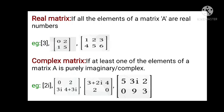Real matrix: if all the elements of matrix A are real numbers, then it is said to be a real matrix. A matrix which contains only real numbers is called a real matrix.